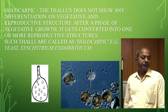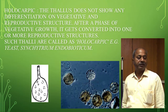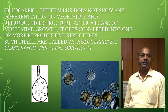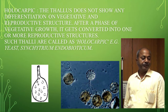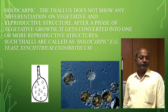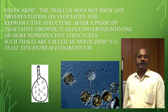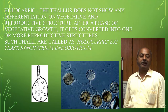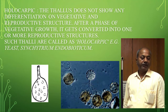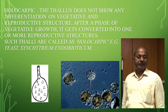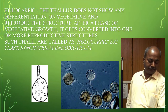In holocarpic thallus, when the thallus does not show any differentiation into vegetative and reproductive structure, and after a phase of vegetative growth the whole body is converted into one or more reproductive structures, it is called holocarpic. Examples include Synchytrium and Synchytrium endobioticum.